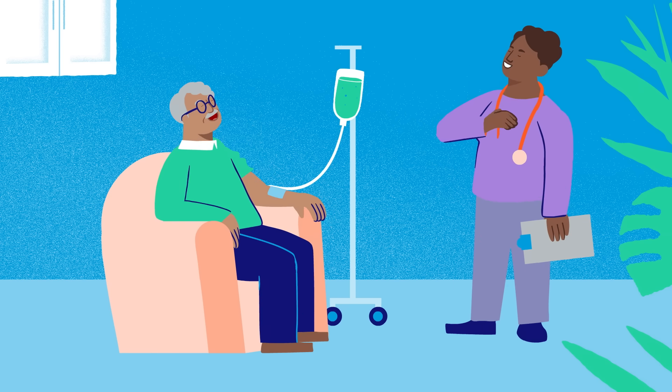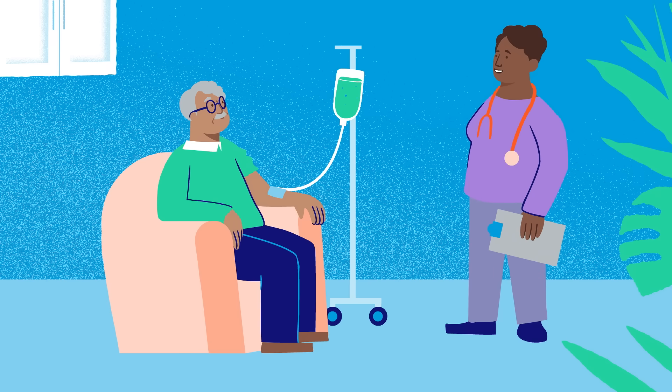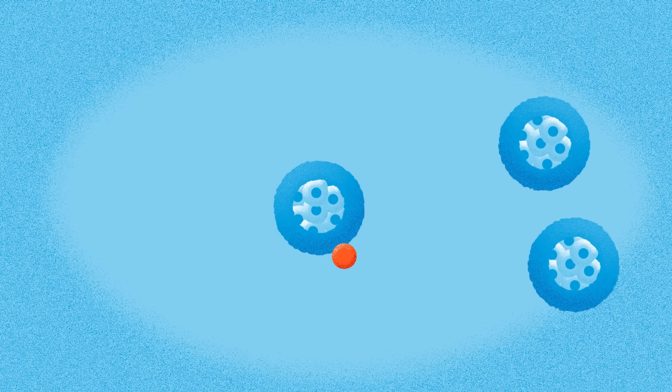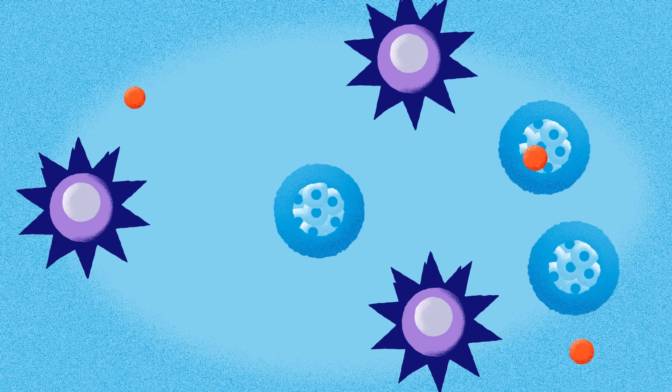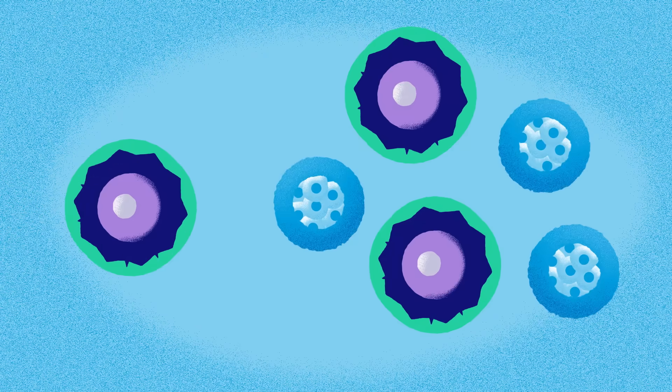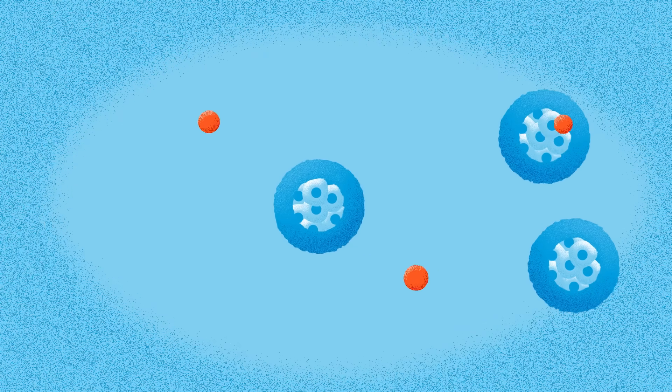Once we can give Many new beta cells, we then need to protect them from another immune attack. This is where immunotherapy comes in, taking us a step closer to a cure for type 1 diabetes.